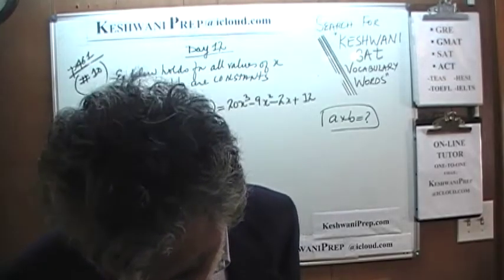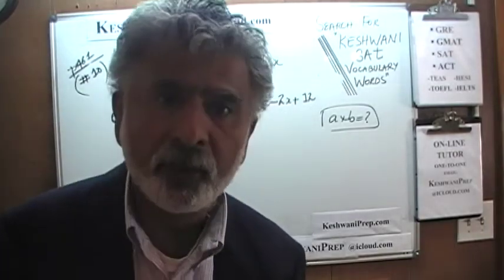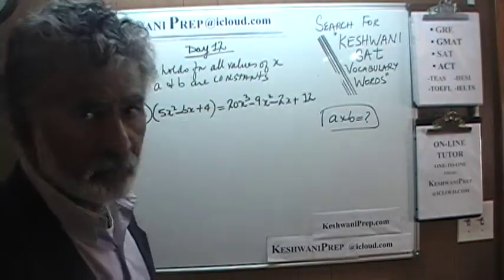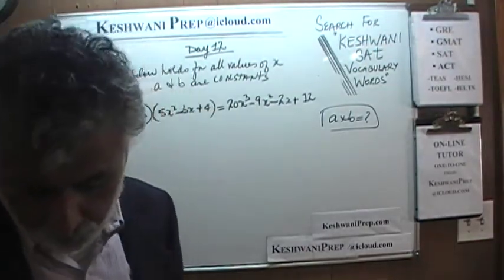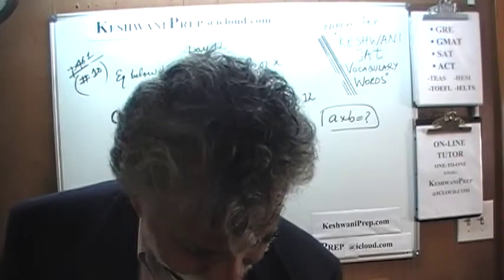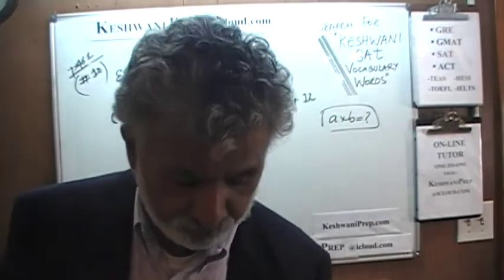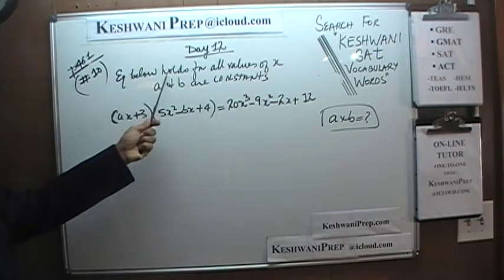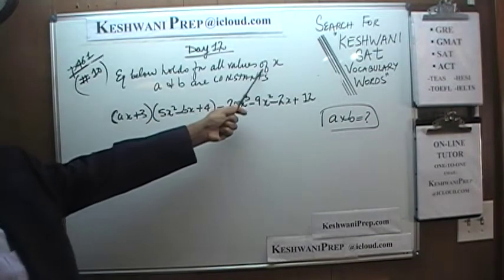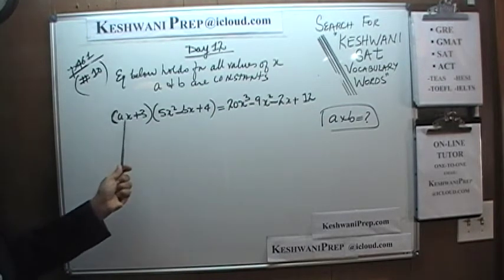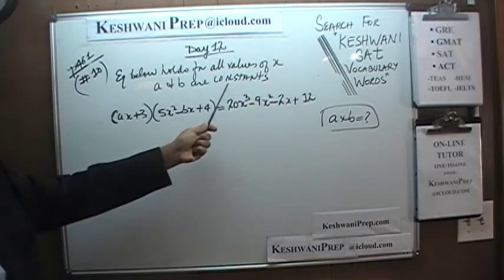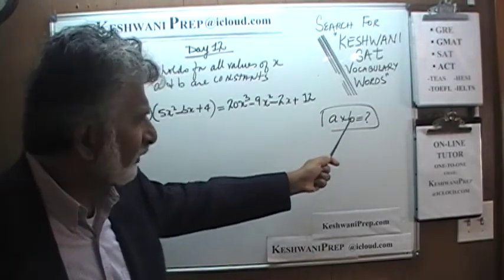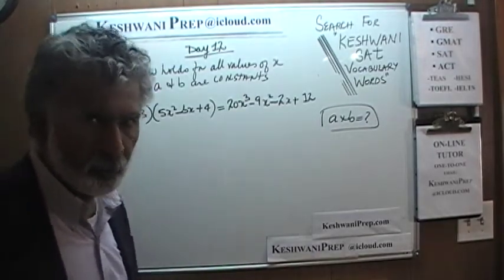Problems number 8 and 9 on page 461 are the two problems we did yesterday on day number 11, so I'm not going to redo them. We will pick up from number 10. As you can see, problem number 10 is already on the blackboard. We are told the equation holds for all values of x, that a and b are constants, and the question asks: what is the product of a and b?